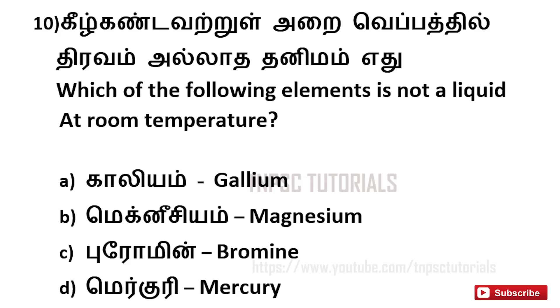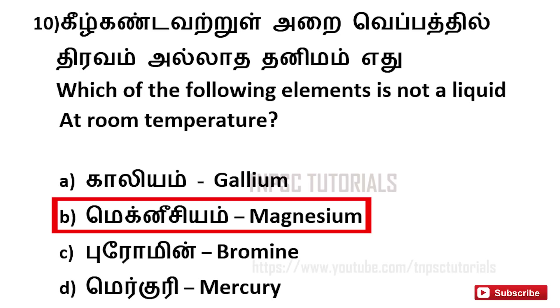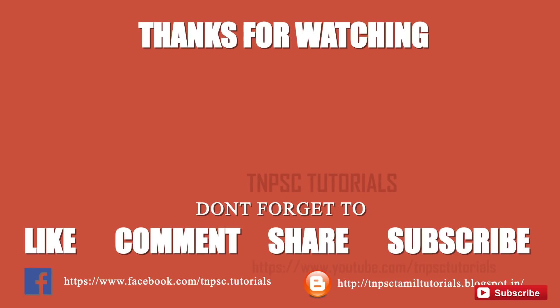Tenth one: which of the following elements is not a liquid at room temperature? A. Gallium, B. Magnesium, C. Bromine, D. Mercury. And the answer is B. Magnesium.